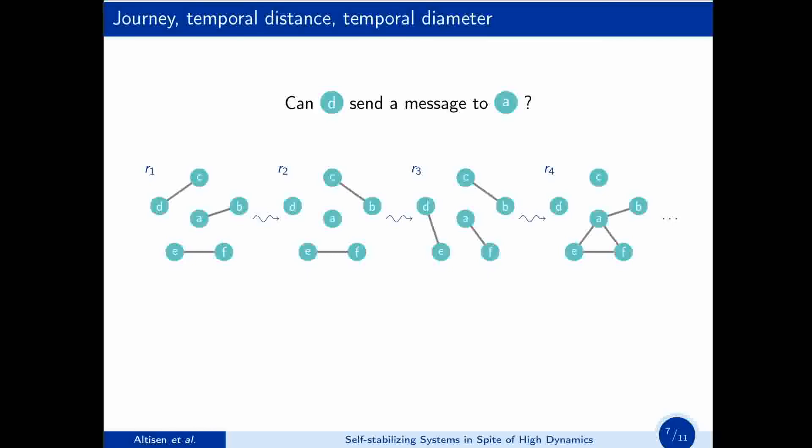Here, can process D send a message to process A? Well, during the first round, D can send a message to C. Then, C can forward the message to B. Then, during the third round, the message can remain on process B. And finally, process B can send the message to A. So here, in red, we have a journey from process D to process A, and its length is 4 since we need 4 rounds to go from D to A. With these journeys, we can now define the temporal distance between two processes, and the temporal diameter of the network.